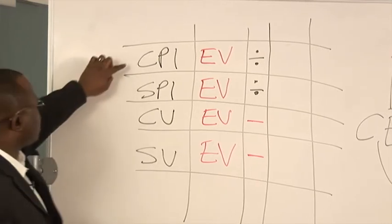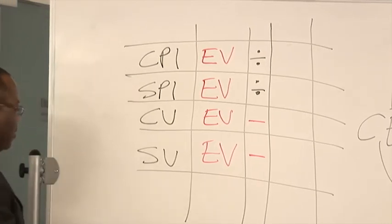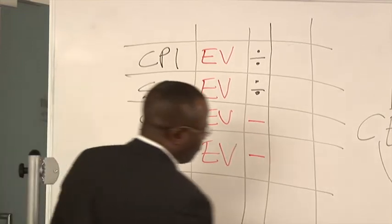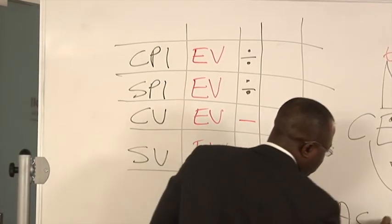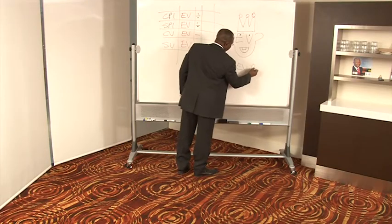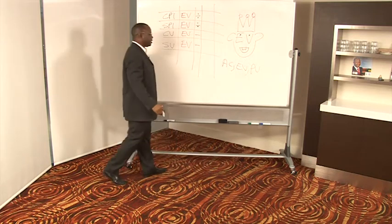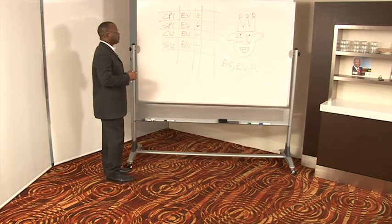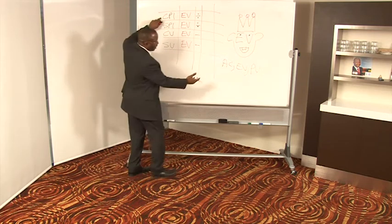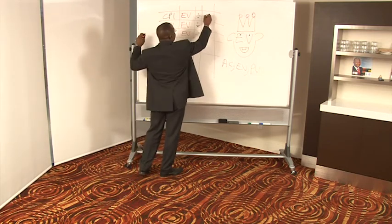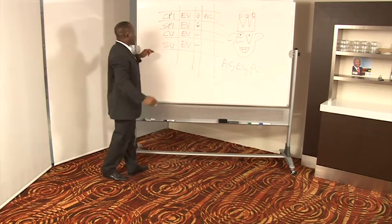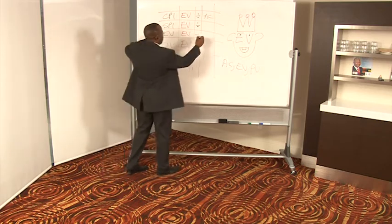If we're talking about cost, remember we've got these three basic metrics: AC, EV, and PV. Basic metrics in EV. If we're talking about cost, we're gonna take the actual cost and put that in here. Talking about cost, actual cost.